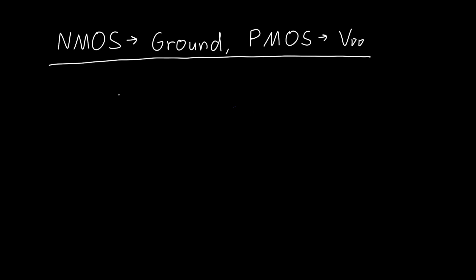You might have noticed in digital circuits that we're always connecting NMOS transistors to ground and PMOS transistors to VDD. So why is this? And is this the only way to do things? To answer this question, we're briefly going to review transistor theory.